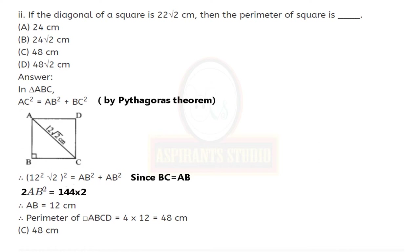Now we find the perimeter of square ABCD. Perimeter of a square is 4 times the side, so it is 4 times 12, which equals 48 cm. The answer is C, which is 48 cm.